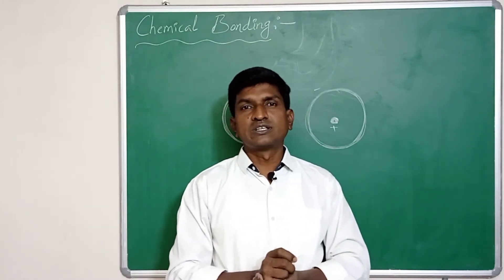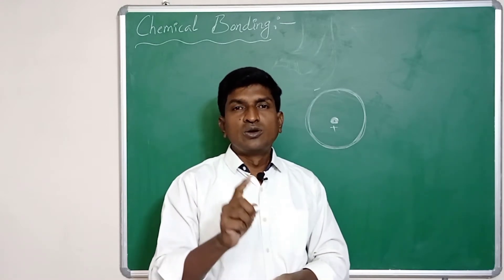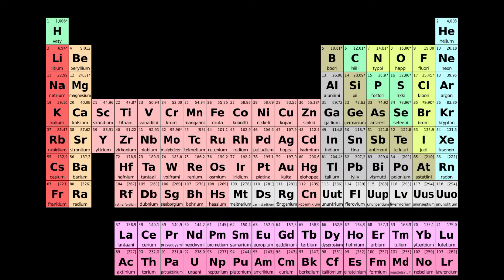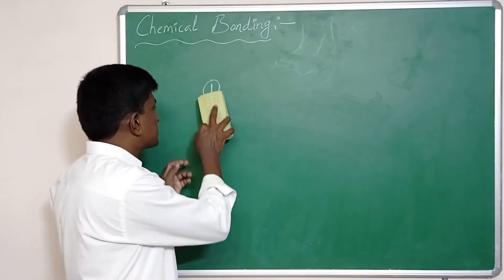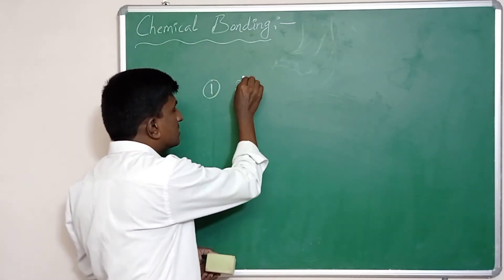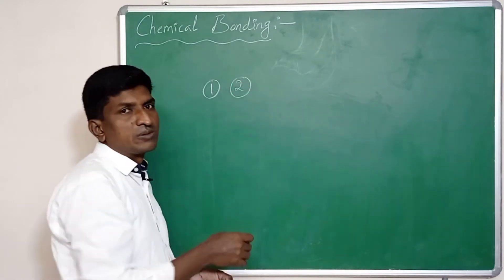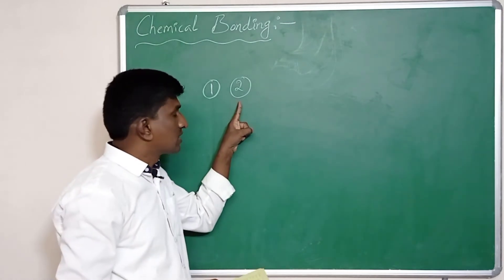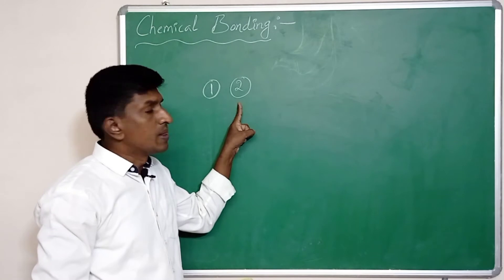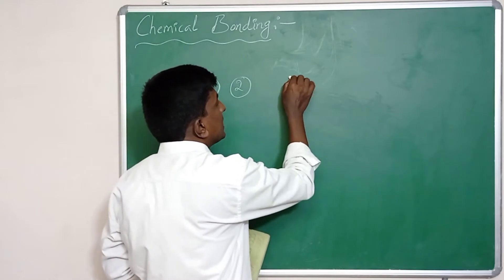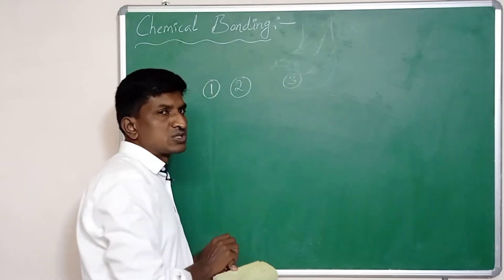The chemical bond is the attraction force between two atoms to form a stable compound. In the long form of the periodic table, first group elements have only one valence electron, second group elements have two valence electrons, and the 13th group elements have three electrons in the outermost orbit.